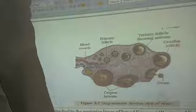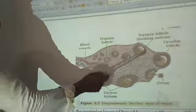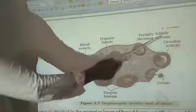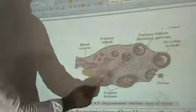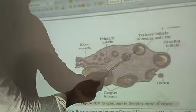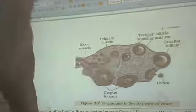If even more granulosa cells are added surrounding the primary oocyte, a cavity called the antrum is formed inside the follicle. After the formation of this cavity, the secondary follicle becomes a tertiary follicle.